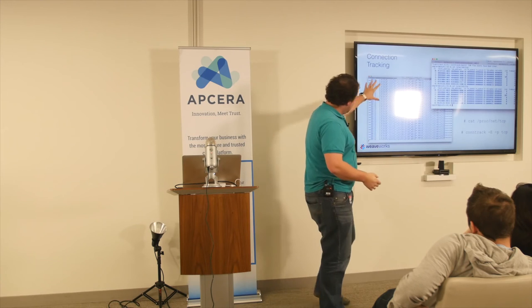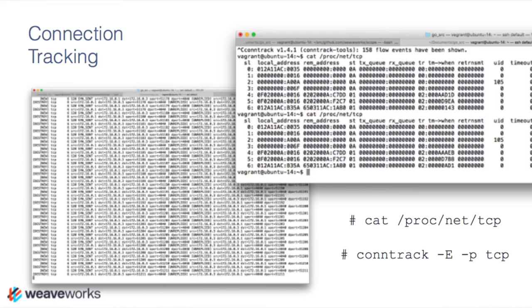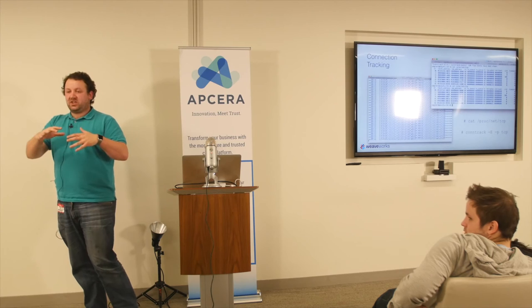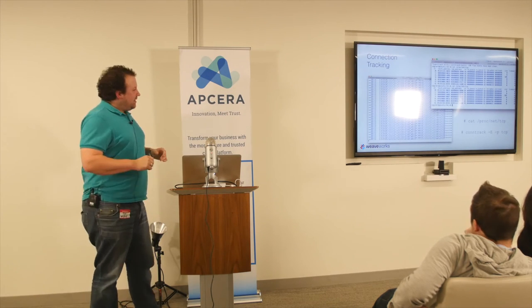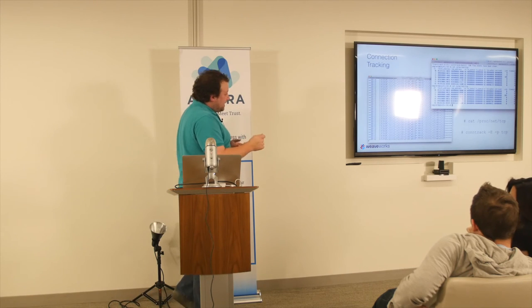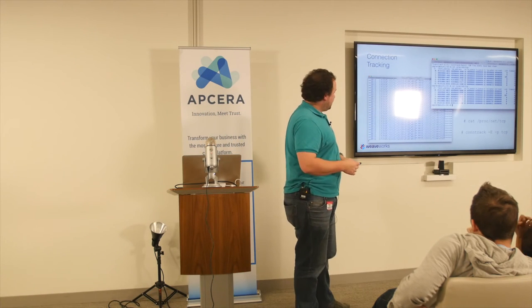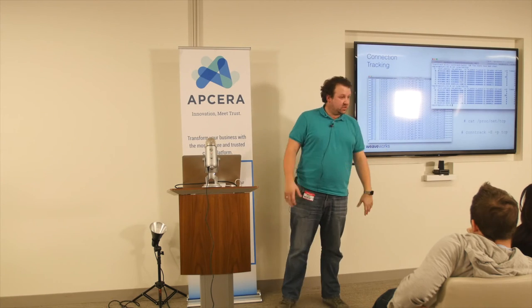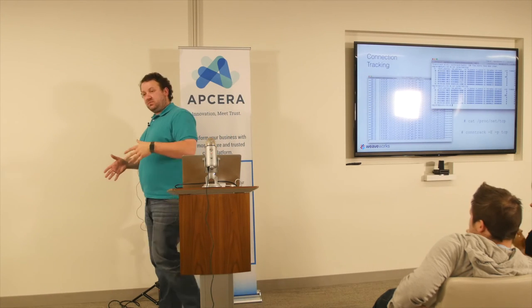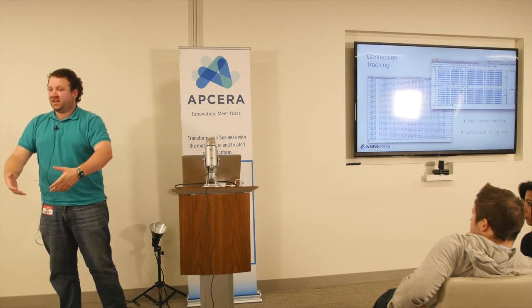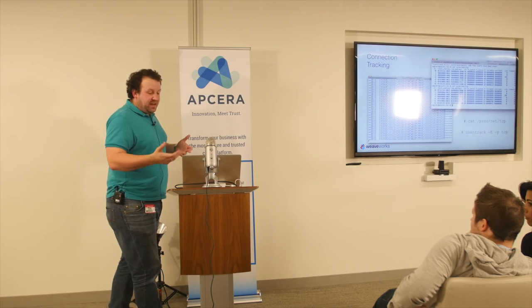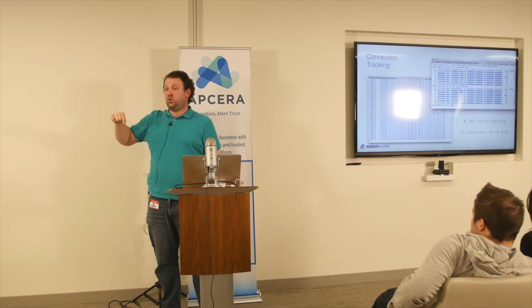The other method is conntrack. If anyone has ever used NAT — which I think everyone uses — conntrack is the mechanism in the kernel that tracks connections and manages the tables. There's a userland tool you can run with the -E flag and it tells you in real time the connections that are going on. In a high throughput system you might miss some connections, but generally this is better than the proc filesystem because you can see short-lived connections.